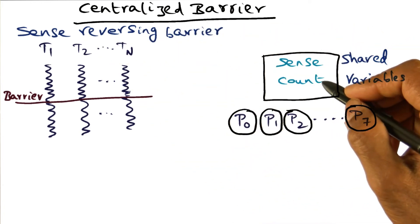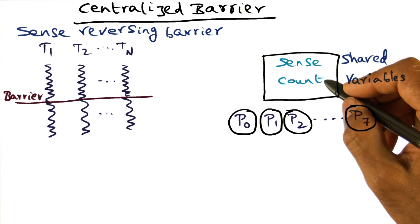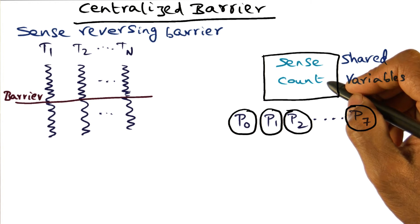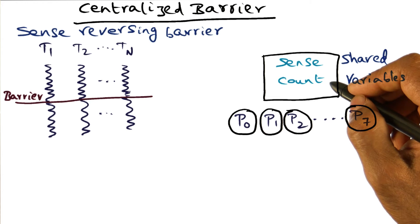In the counting barrier, we needed two spinning episodes. The first spinning episode was when you arrive at the barrier, you decrement the count and wait for the count to become zero. The second spinning episode to leave the barrier, what you needed to do was to make sure that the count has become n. Those are the two spinning episodes that were there in the counting barrier.